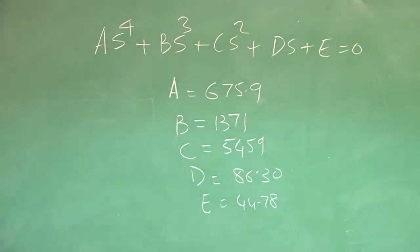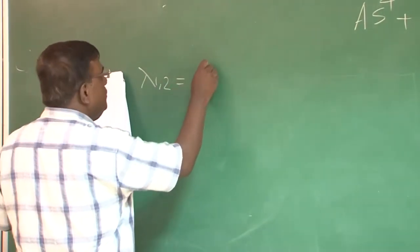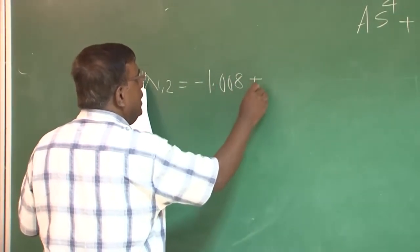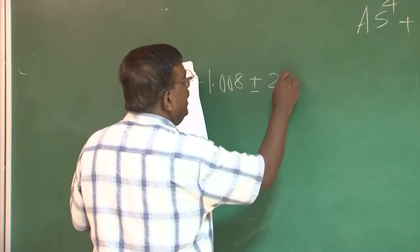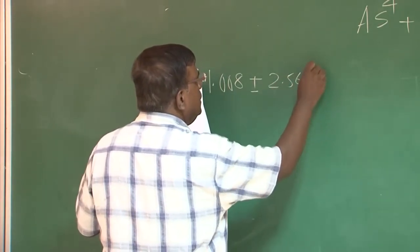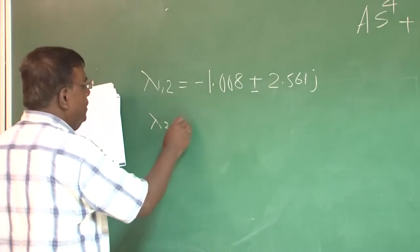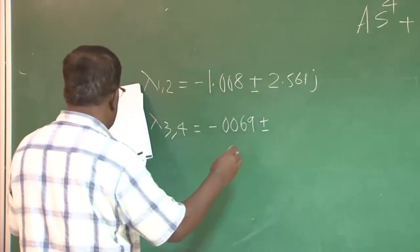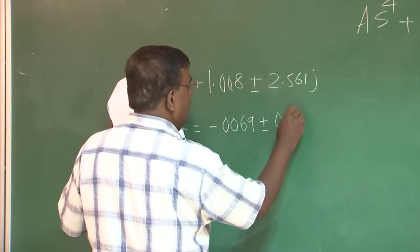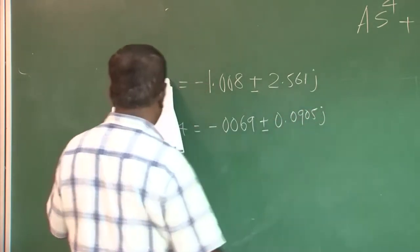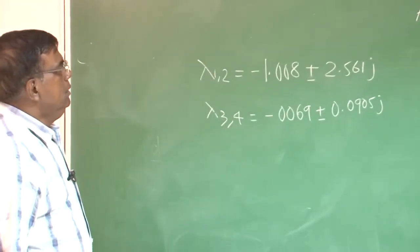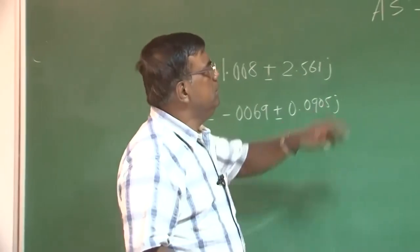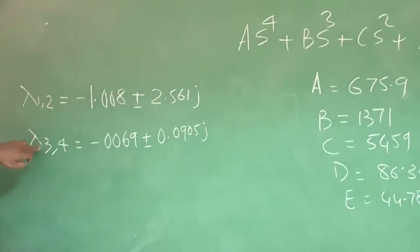But what we want to find out now is the roots of this equation. And if you apply numerical methods, you will find it will generate roots like this: lambda_1,2 as minus 1.008 plus minus 2.561j and lambda_3,4 as minus 0.0069 plus minus 0.0905j.